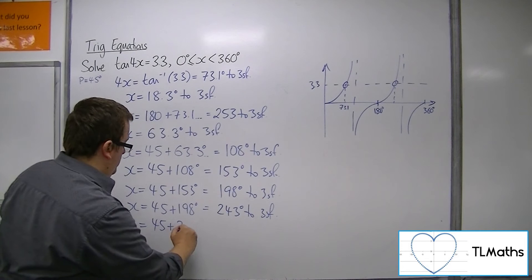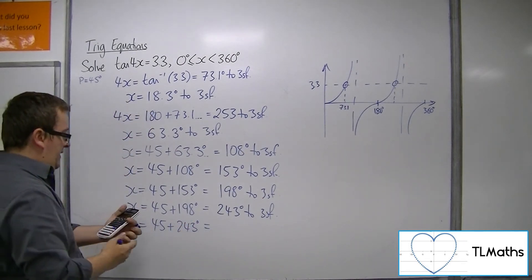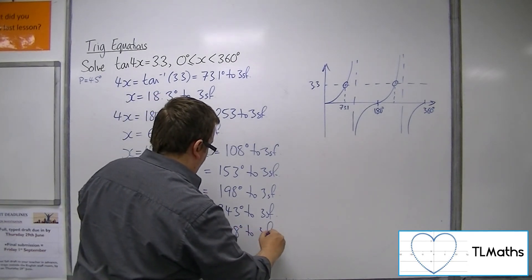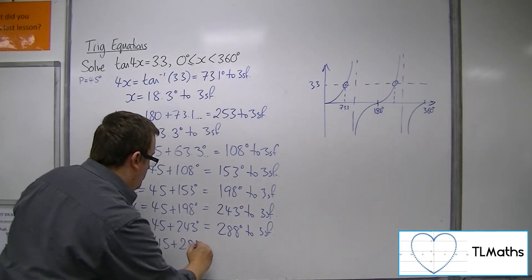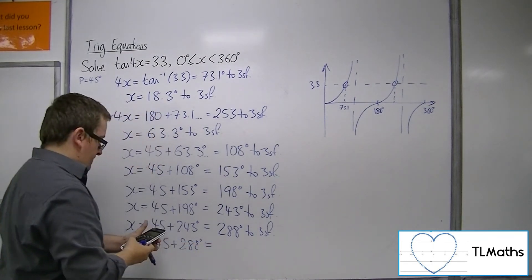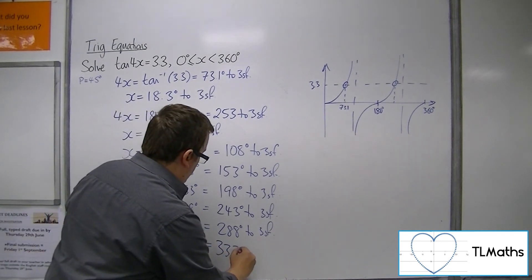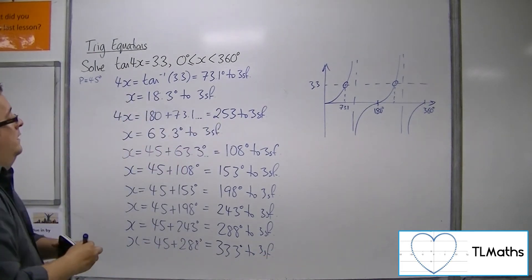Lost count of how many I've got so far. Adding on another 45. Just need to keep going until I go past 360. This will be the last one, I think. 333 degrees to 3 sig fig.